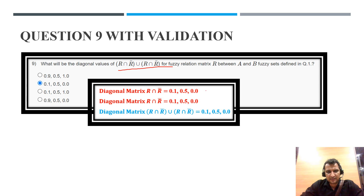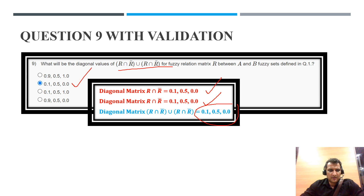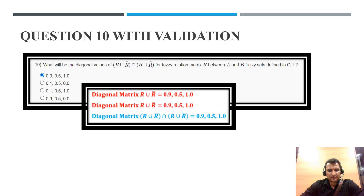Question 9: (R intersection R̄) union (R intersection R̄). This is R intersection R̄, and we take the union again with R intersection R̄. Since both operands are the same, we take the minimum and the answer remains 0.1, 0.5, 0. The correct answer is option B.